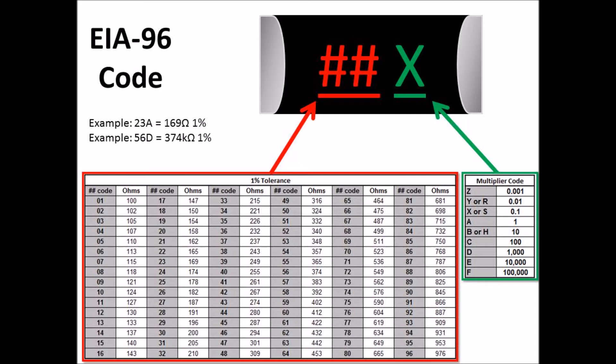And then it's at a 1% tolerance. The second example is 56D, which 56 cross-references to 374, and then D is times 1,000, so it would be 374 kilohms at 1%.